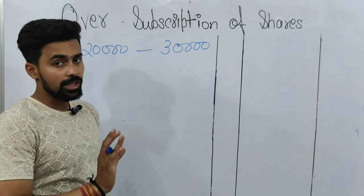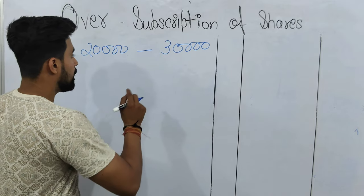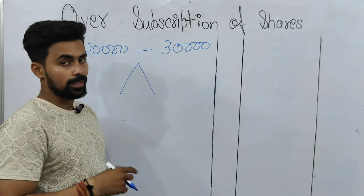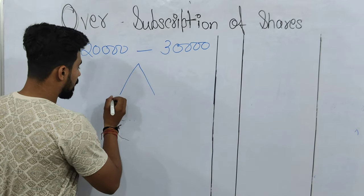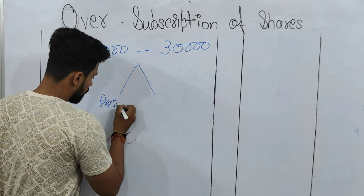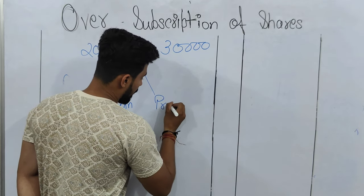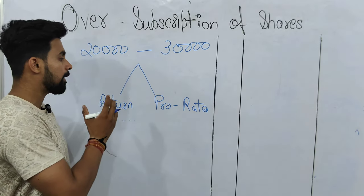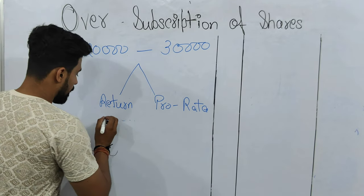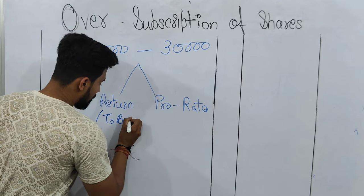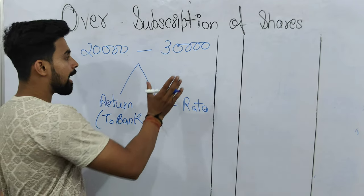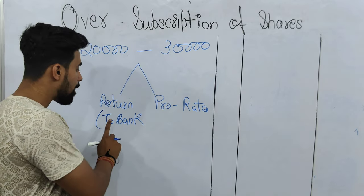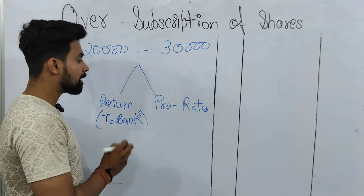There are two ways to handle over subscription in the journal. The first method is return — the extra application money is returned to bank. The second method is pro rata — the 30,000 applications are distributed among the 20,000 allotted shares. The company can use either of these two approaches for over subscription entries.